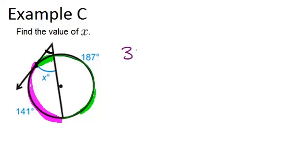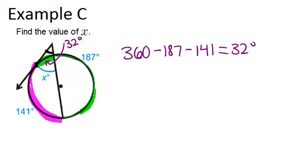we can do 360 minus 187 minus 141, and we get 32 degrees. So our missing arc right here is 32 degrees. Now we can set up our equation to solve for x.